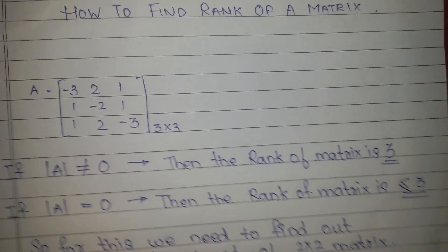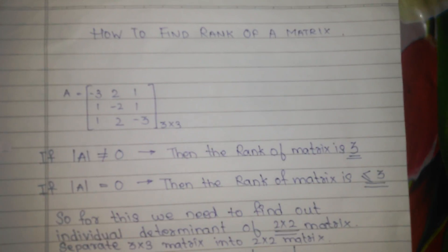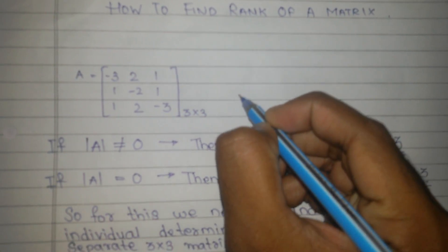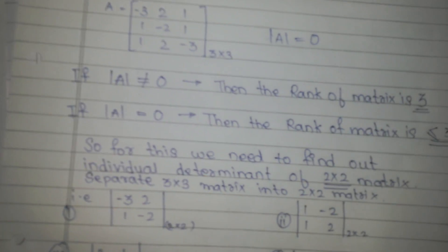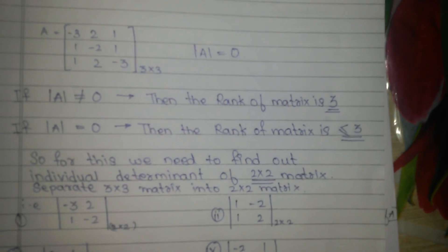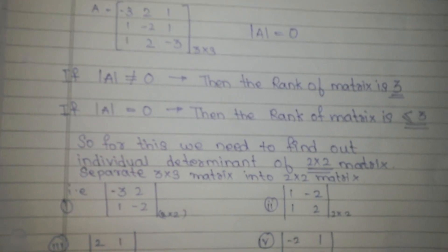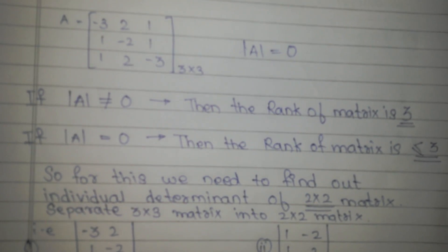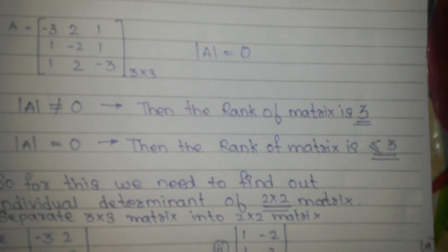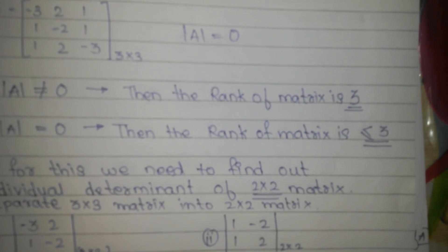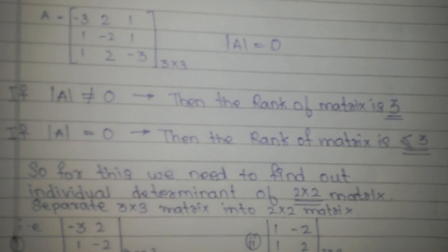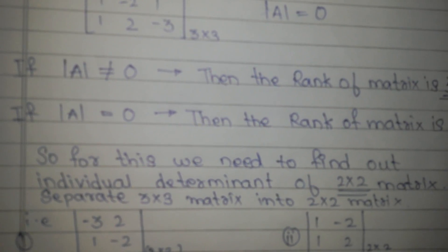As you can see, our determinant is 0. So the determinant of A equals 0. Now I've written some conditions: if the determinant is not equal to 0, then the rank of the 3x3 matrix will be 3. And if the determinant is equal to 0,